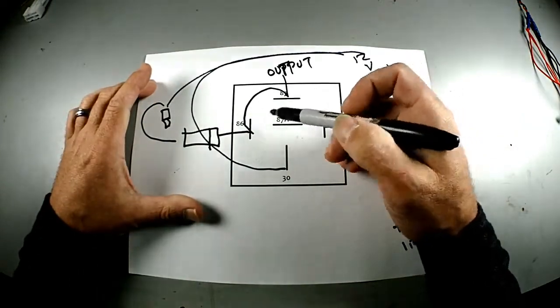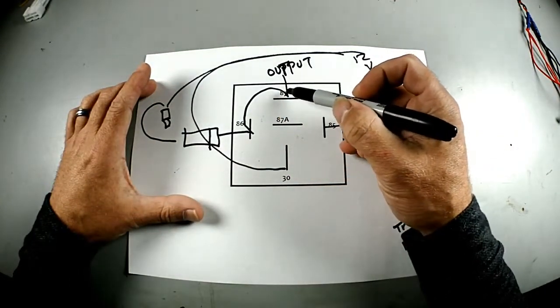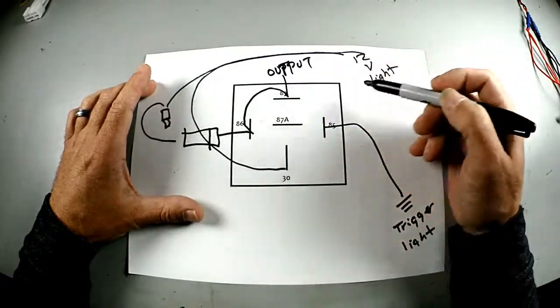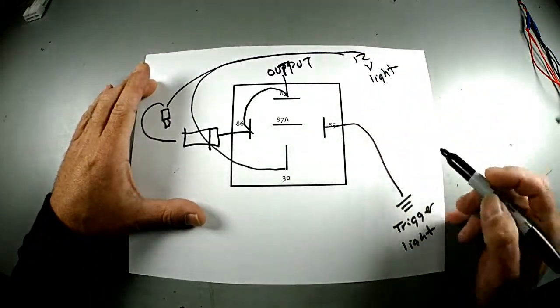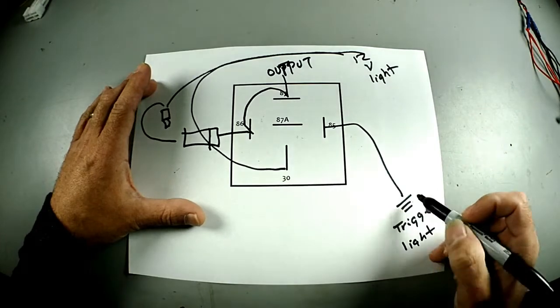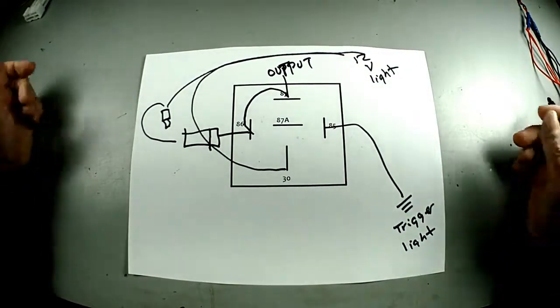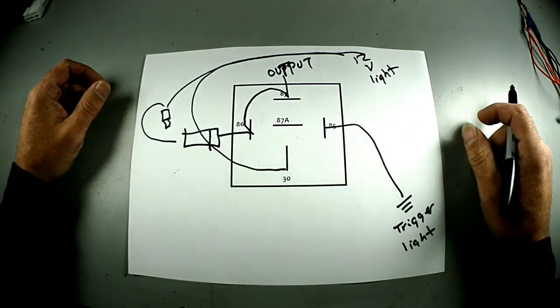So how this works: press the sense button, triggers this, throws power to here, loops back, keeps it on. As soon as you shut the trunk, this ground will go away. When that happens, lights turn off. So that's it - a quick, easy way to make a latching relay.